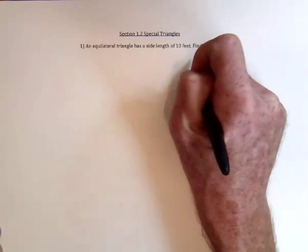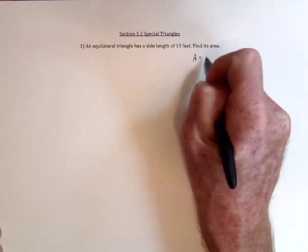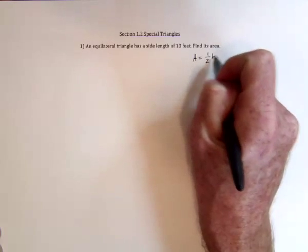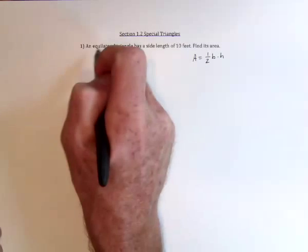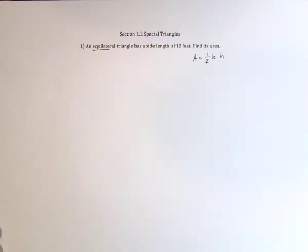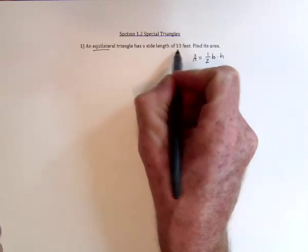In order to find the area of a triangle, we're going to be using the formula area equals 1 half base times height. And in this case, we've got an equilateral triangle, which means that all of the sides are the same length, and they're all 10 feet.